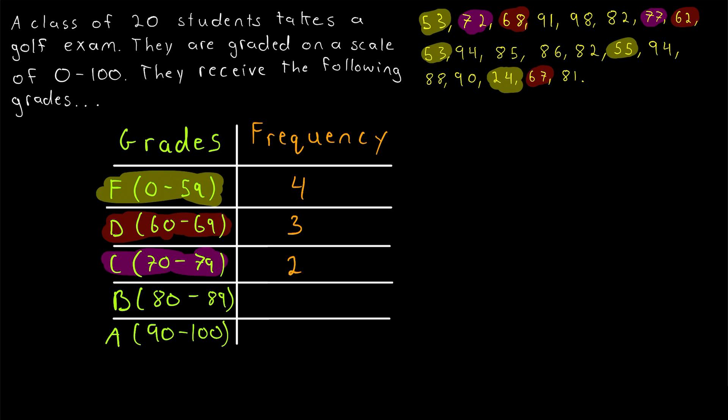Moving on to the B's. The B's are all of the scores between 80 and 89. Let's count them up. We see 82. There's 1. 85. There's 2B's. 86. 82. There's 4B's. 88. And 81. 6B's. There we are. Total of 6B's.